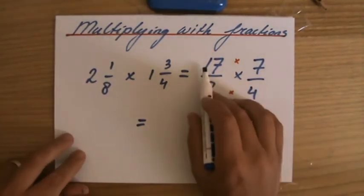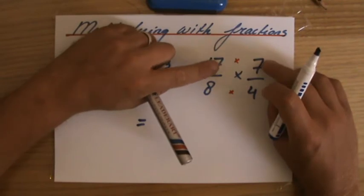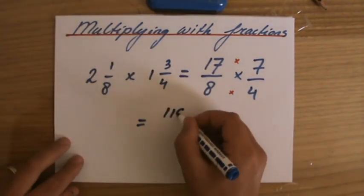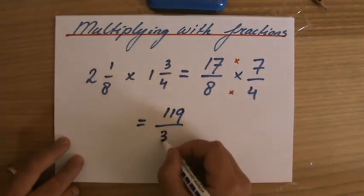17 times 7. And 70 plus 49, it's 119. And the denominator, 8 times 4 equals 32.